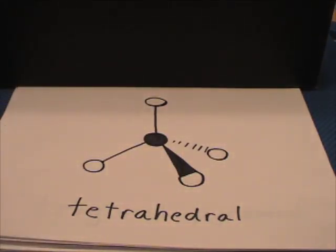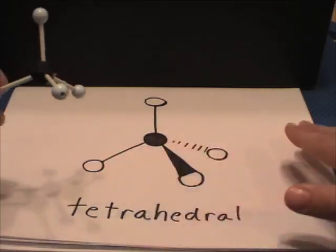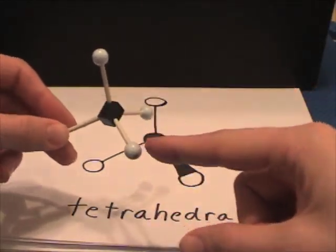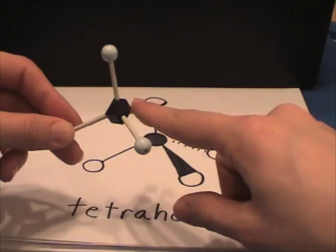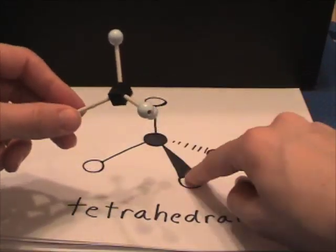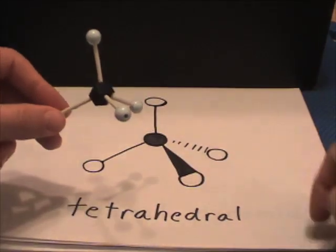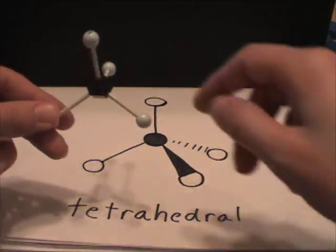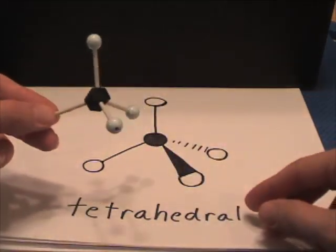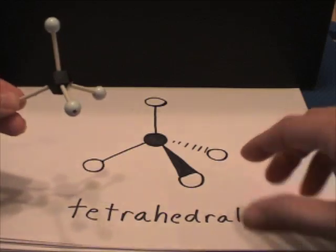Tetrahedral can't be drawn on the plane of the board because one bond comes out and the other one goes back. So we represent this with a wedge coming towards you and dotted lines going back. This is the tetrahedral shape and this is how we draw it on paper.